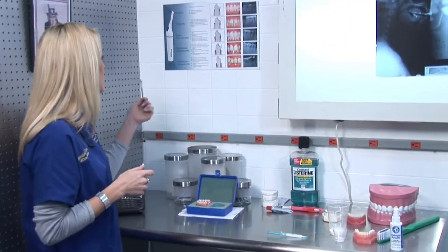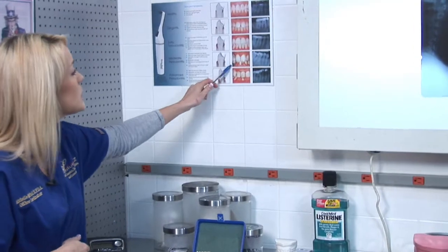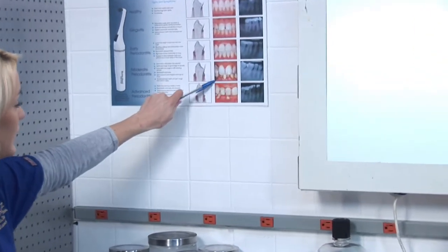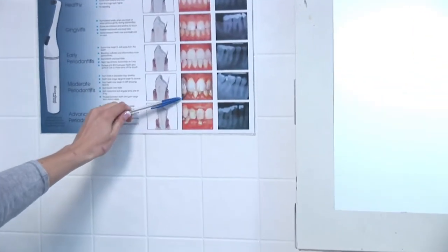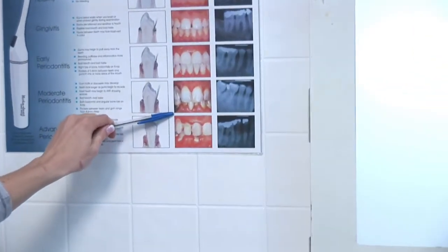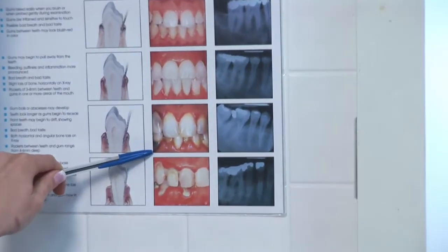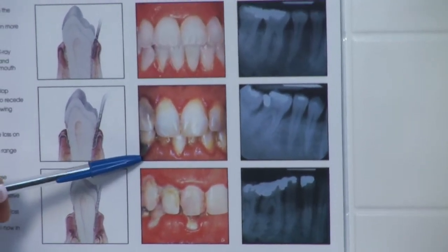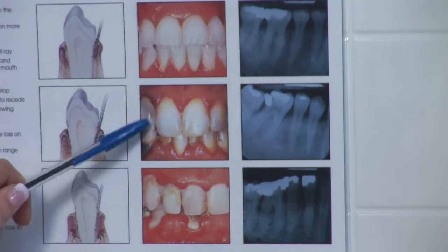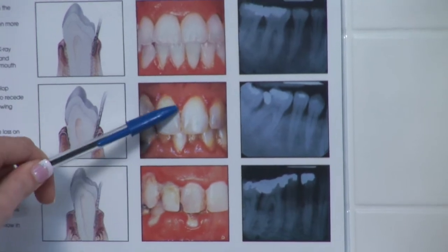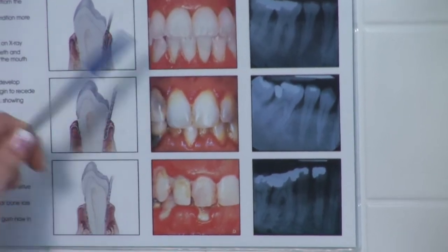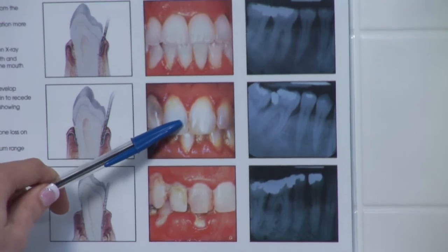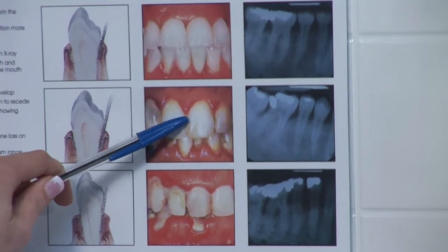By taking a look at this chart, you can see the picture here that we're looking at. One of the main causes for moderate periodontitis is not continuously brushing and flossing your teeth. If you're not continuously brushing and flossing, you'll actually start to see what we call an abscess.